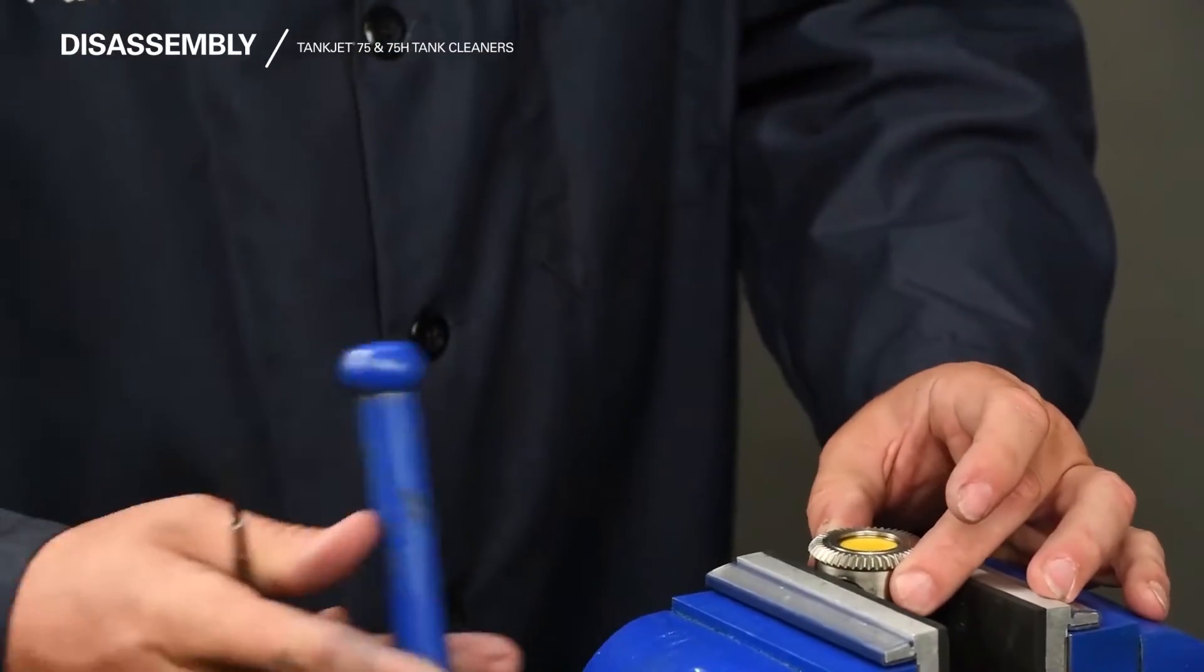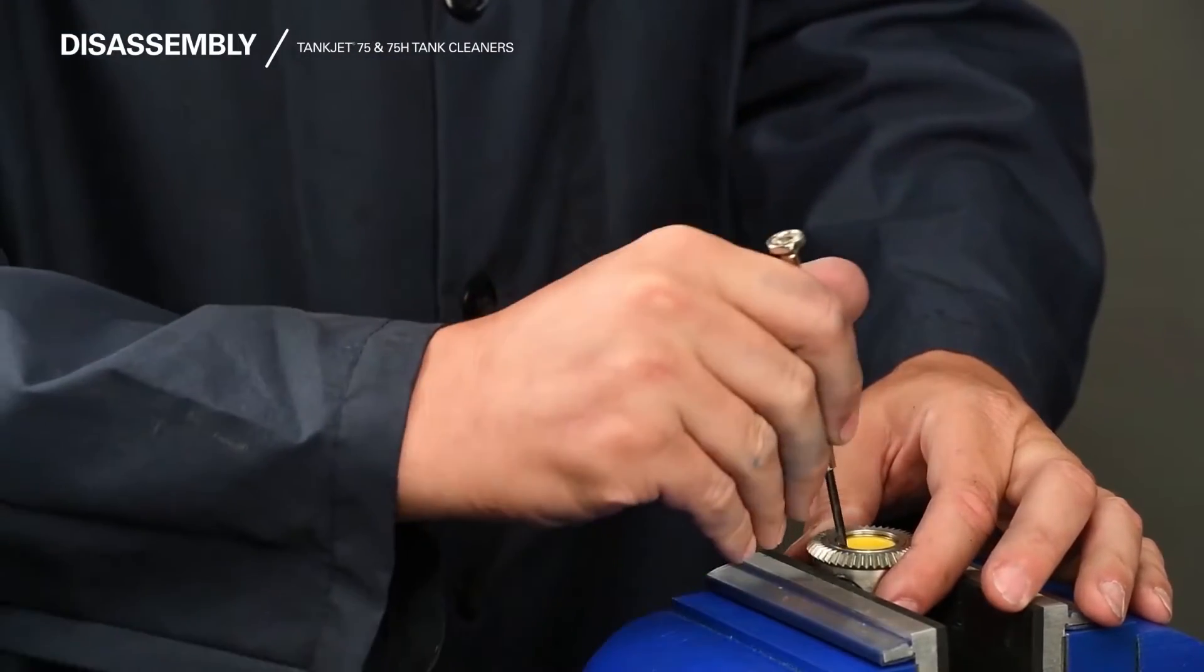Next, remove the snap rings and finally the nozzle hub bushings in all four places.